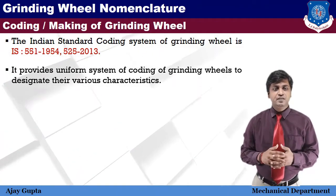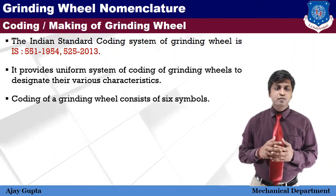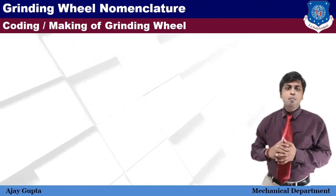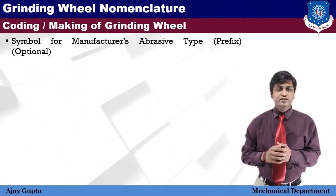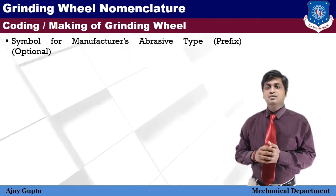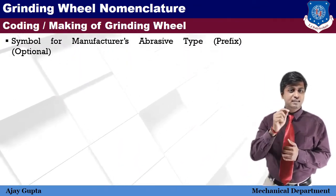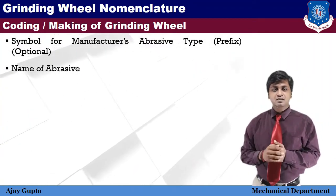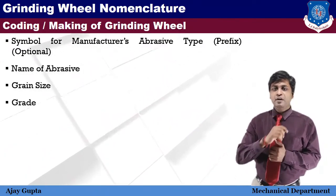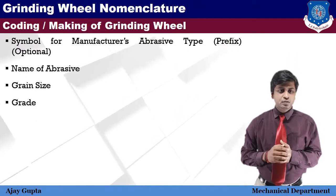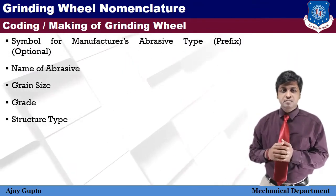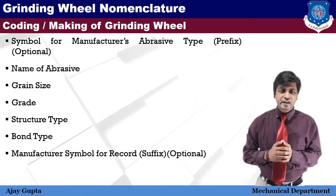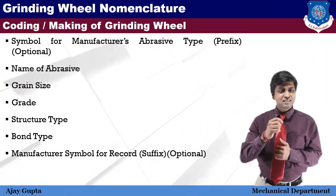The coding of a grinding wheel consists of six symbols by which the grinding wheel can be identified. The first symbol is the manufacturer's abrasive prefix — it is optional. The second is the name of abrasive. The third is grain size, which is the size of each abrasive particle used. The fourth is grade, the fifth is structure type, the sixth is bond, and the seventh is the manufacturer's record symbol, also known as suffix, which is also optional.